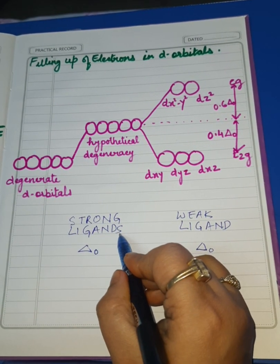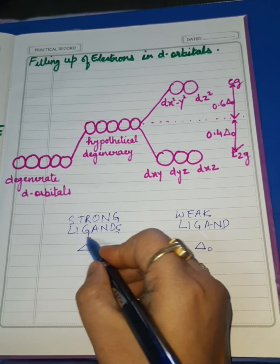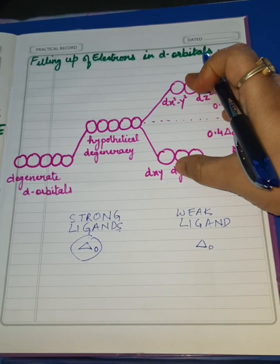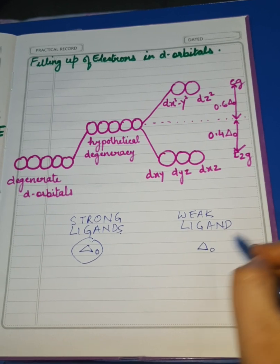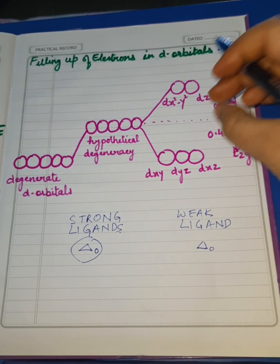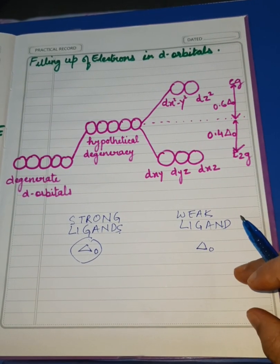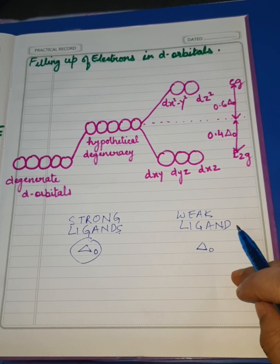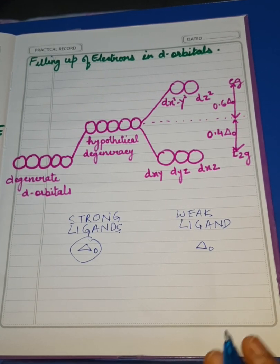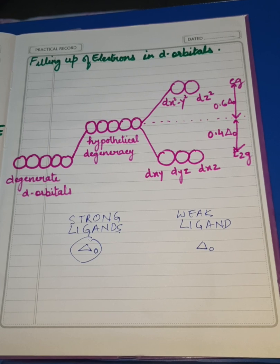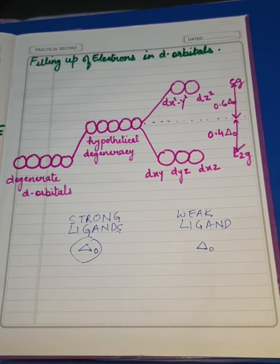In case of strong ligands, the splitting of the d orbital is more. In case of weak ligands, the splitting of the d orbital is less. Now, which are those strong and weak ligands? Though I have taught you in my previous video on VBT, but once again I will give you the list of those ligands.